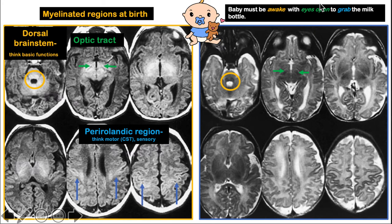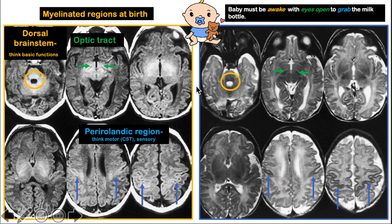The word 'grab' is associated with motor function. At birth, there are areas controlling motor function which are myelinated. For a baby to make movements, the motor tract starts in the motor cortex — in the pyramidal cells — which then sends axonal tracts through the posterior limb of the internal capsule.